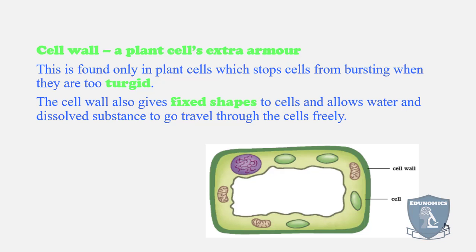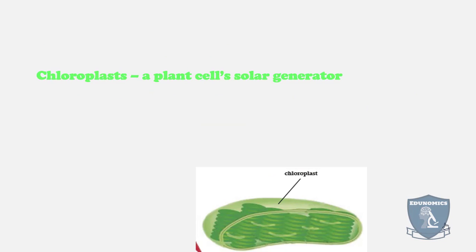The cell wall allows water and dissolved substances to travel freely through the cell. Plant cells also have cell membranes right under the cell wall. The next organelle specific to plant cells are chloroplasts.